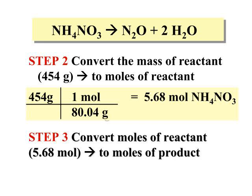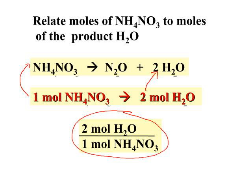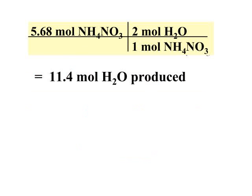Our next step is to convert these moles of ammonium nitrate into moles of the product we're interested in — water. We do that by using the coefficients in the balanced equation and the mole ratio. Looking at the equation, you can see one mole of ammonium nitrate produces two moles of water. So we set up our mole ratio, getting rid of the ammonium nitrate and moving to the product of interest, water.